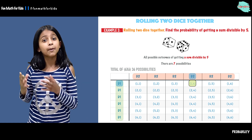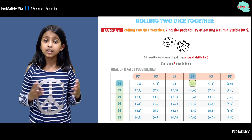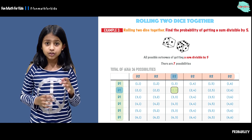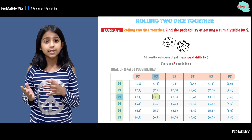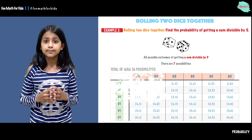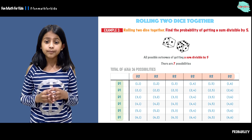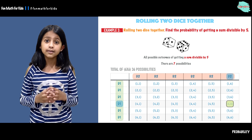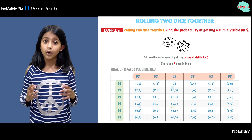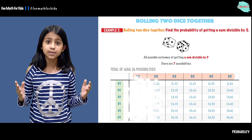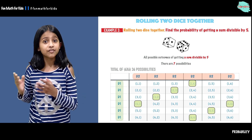Five is divisible by five. Another example is two and three, or three and two, four and one, four and six, five and five, or six and four. Those are the seven possibilities that have a sum divisible by five.